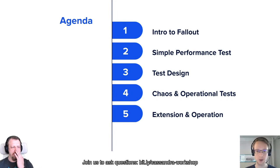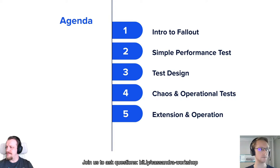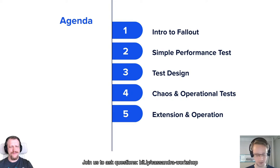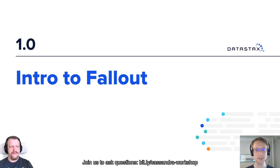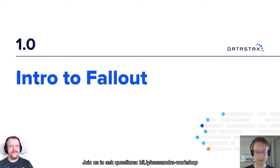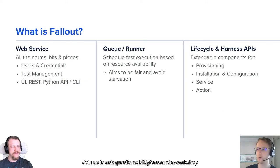The goal is to understand where Fallout sits in your infrastructure, the purposes you want to achieve using Fallout, and then we'll get our hands dirty to run some tests. Hopefully you walk away knowing how Fallout is actually useful and how you can bring it back into your own world and infrastructure. At steps two and four, we're going to be running some tests. If you registered on Eventbrite, you'll have an AMI with Fallout running.